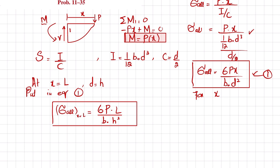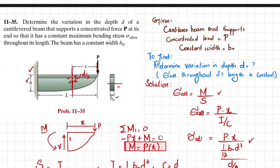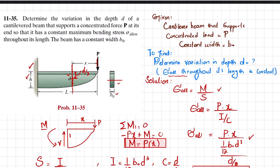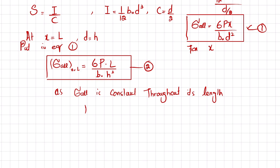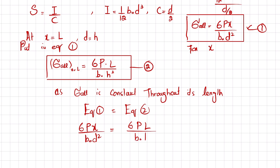The condition is that sigma allowable is constant throughout its length. So equation one equals equation two. That gives us 6Px divided by b naught d squared equals 6PL divided by b naught h squared. P and P cancel, b naught and b naught cancel.